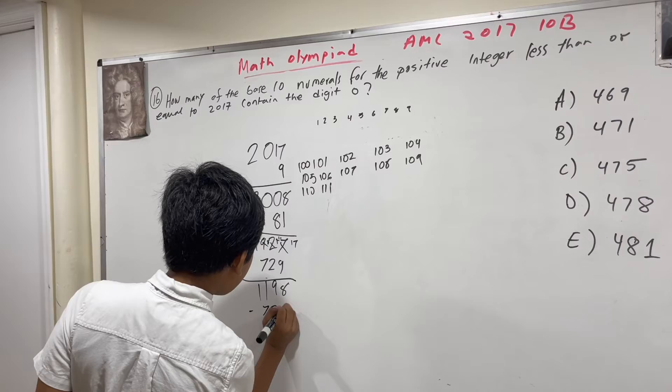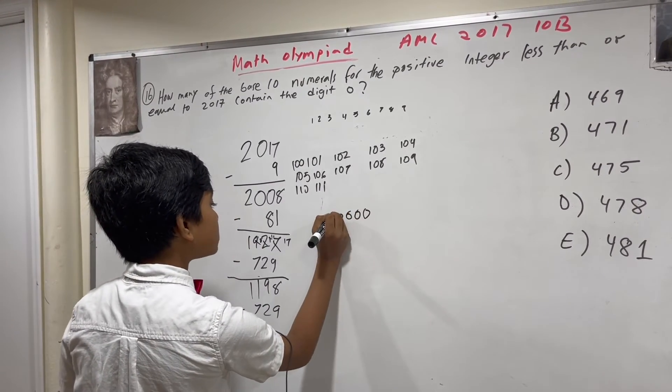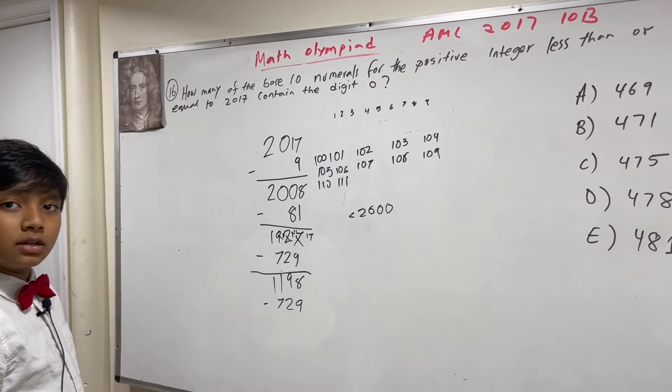Now, we subtract 729 more for all four-digit numbers less than 2,000 that have no 0s.